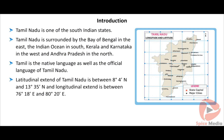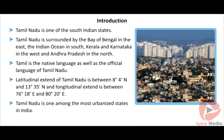The latitudinal extent of Tamil Nadu is between 8 degrees 4 minutes north and 13 degrees 35 minutes north, and the longitudinal extent is between 76 degrees 18 minutes east and 80 degrees 20 minutes east.